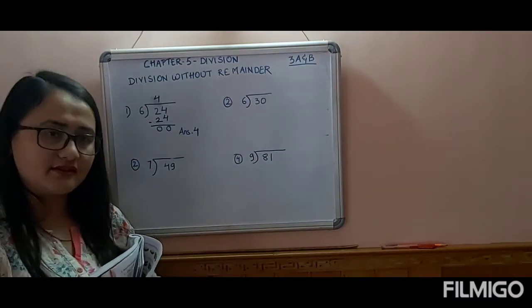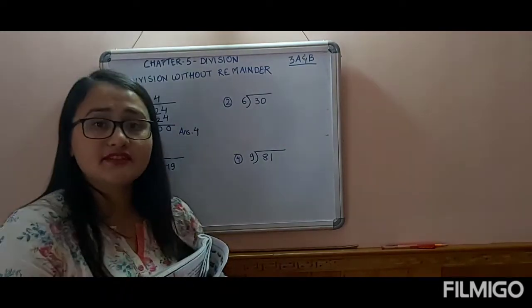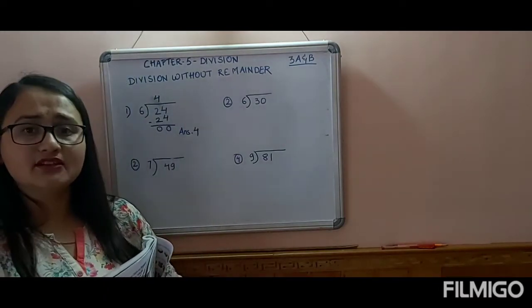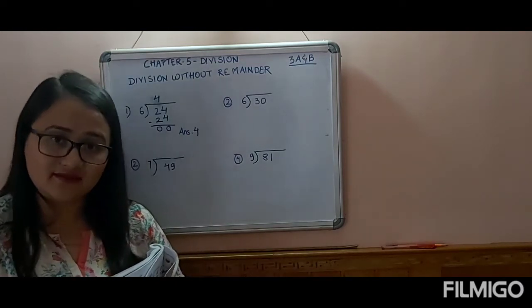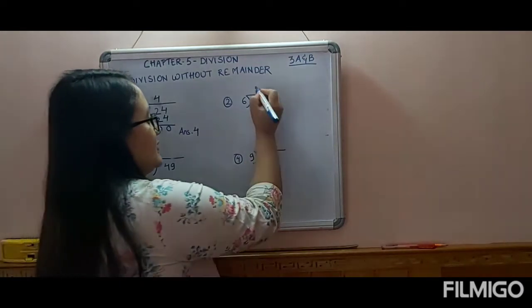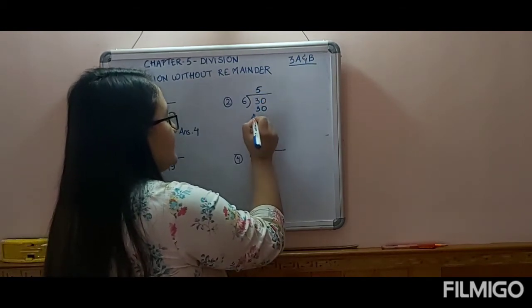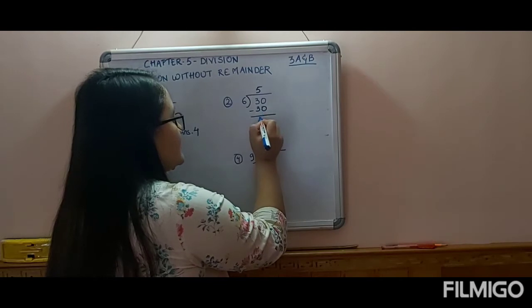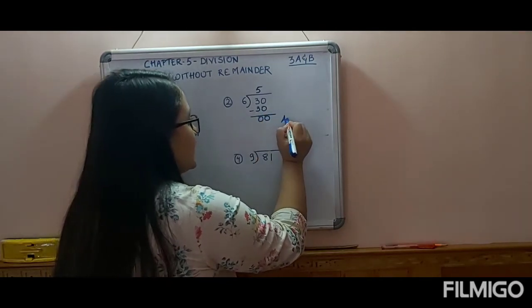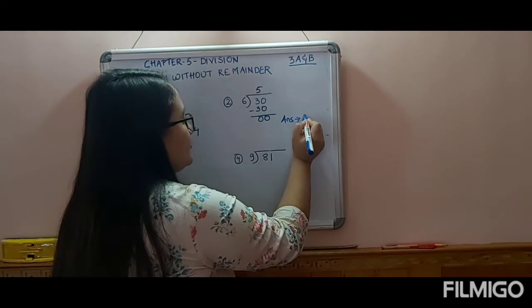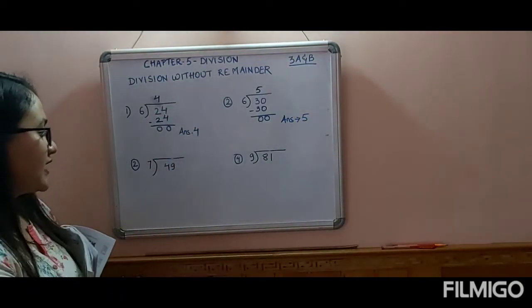Let's move to the next sum. Table of 6 again: 6 ones are 6, 6 twos are 12, 6 threes are 18, 6 fours are 24, 6 fives are 30. We write 5, then we minus, and this becomes 0. Your answer is 5.